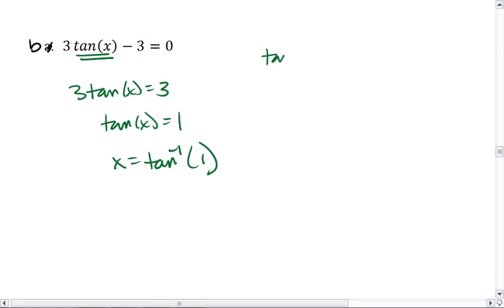Remember, tan of x is sin(x) over cos(x). So, if tan is 1, that means sin of x and cos(x) have to have the same exact value.